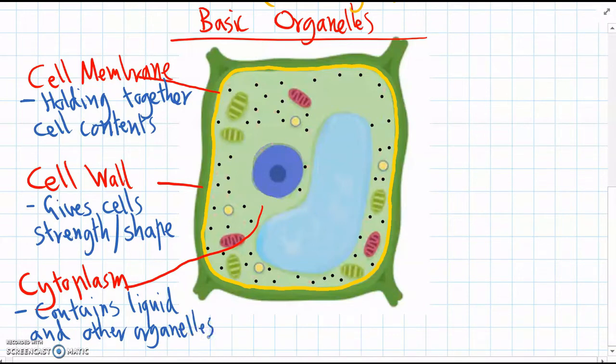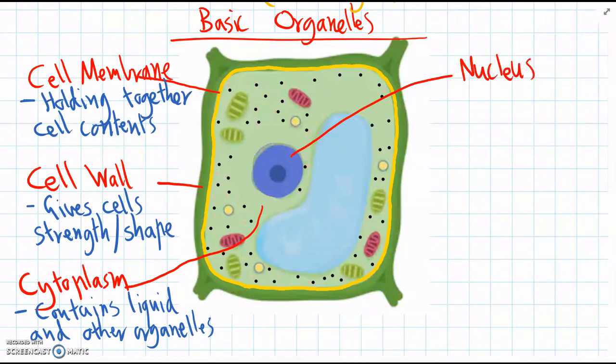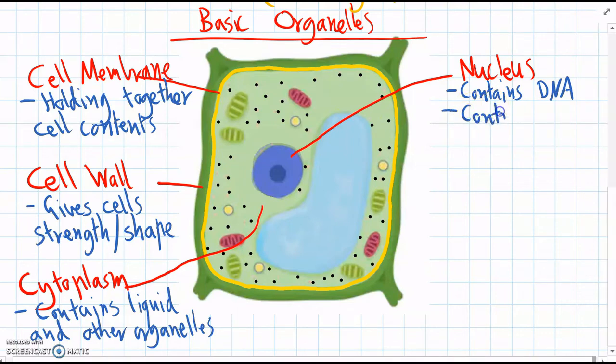So let's look at a couple of other specific organelles that do different jobs inside the cell. Now the most important one probably is this big one in the middle here which is called the nucleus. And the nucleus contains all the DNA. And DNA is important for controlling all cells and telling them what instructions they need to do when. So the nucleus is like the control center of the cell.